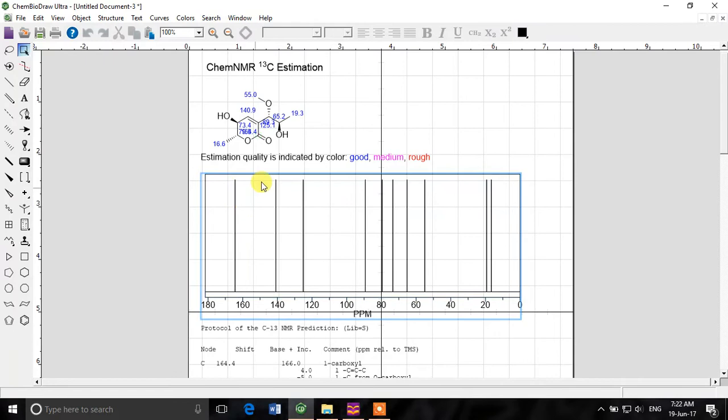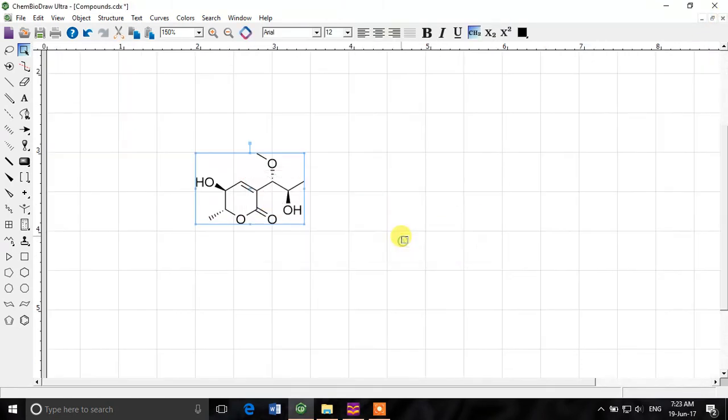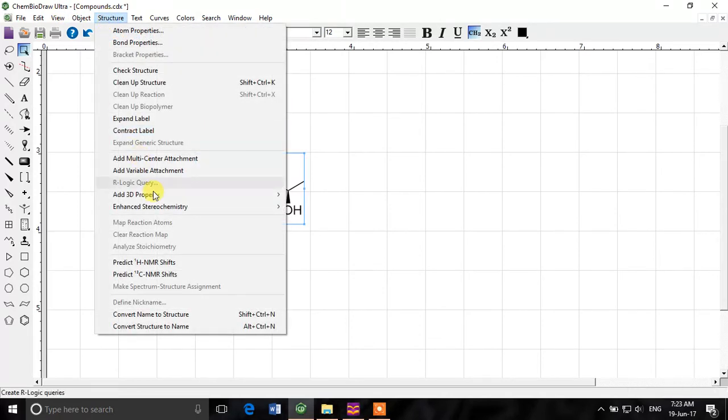And the estimation here is good as well. It's a small compound so it is usually good if you have usual compound not unusual structures or radicals. Then the NMR prediction is pretty good in ChemDraw. We'll close it again. And then there is another option in the structures. Convert name to structure or convert structure to name.